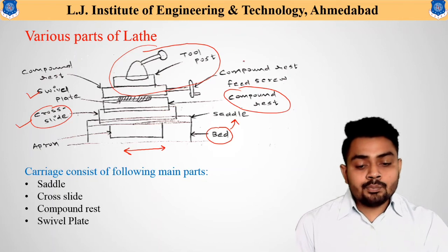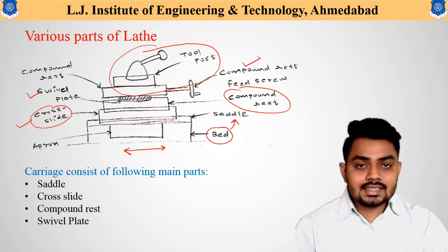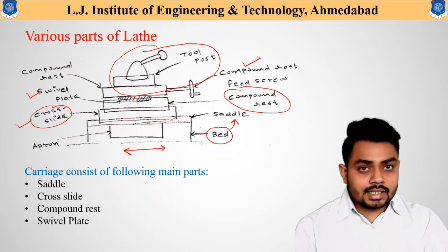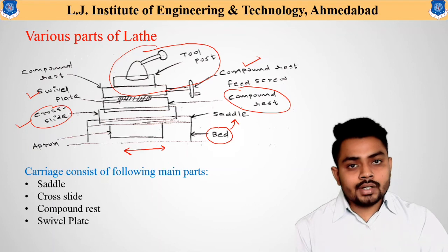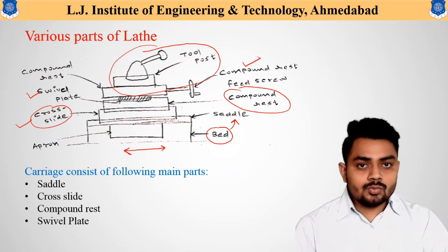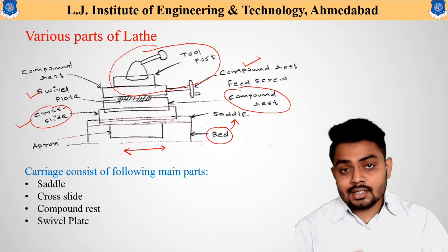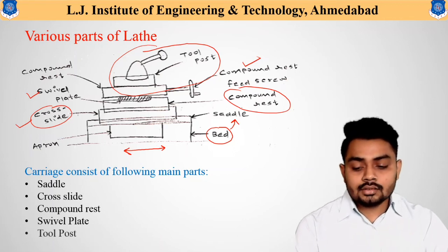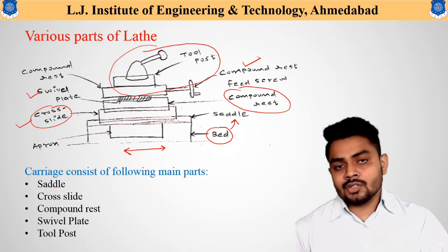The compound rest also has a feed screw — during taper turning operation, the feed movement is given using this compound rest feed screw. In simple words: for parallel feed movement, the saddle is used; for perpendicular feed movement, the cross slide is used; and during taper turning operation, the compound rest feed screw provides the feed movement. Finally, the tool post rigidly fixes the cutting tool so that the machining operation can be performed easily.